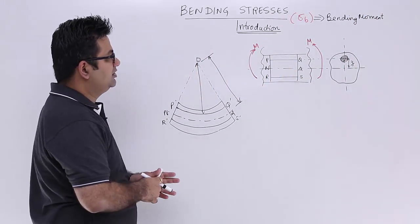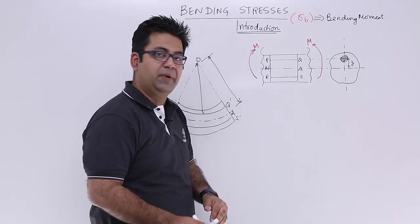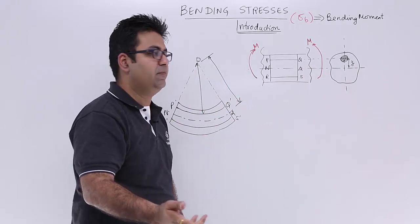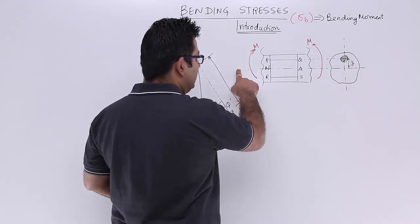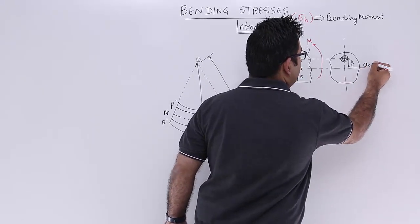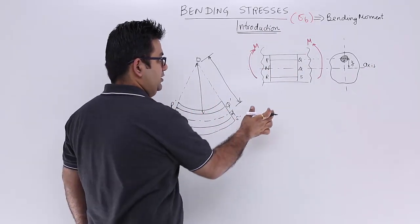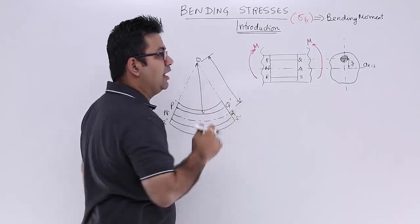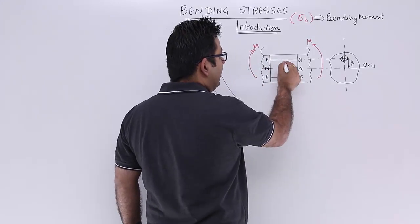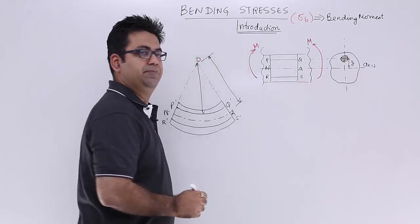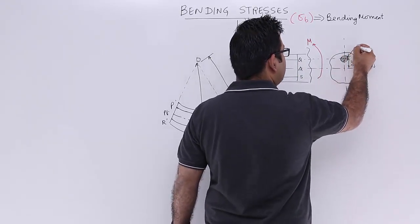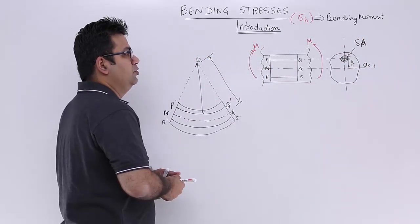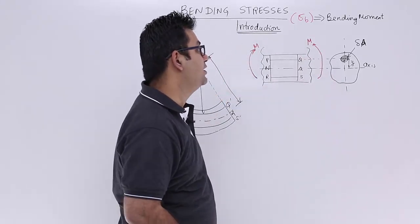Consider a short length of a beam. This is the beam axis, and the cross-section area of the beam is any random shape. Within this small length, I have taken two layers — one above the axis and one below. The upper layer is at a distance y from the axis, and that small region has area delta_a, so delta_a is at a distance y from the beam axis.